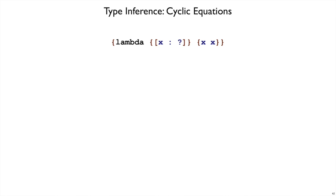Here's a program with a question mark that illustrates a different potential problem with type inference. I've said x has type question mark, that means we'll make up a variable t1 to stand for the type of x, and everywhere that x is used it has type t1.